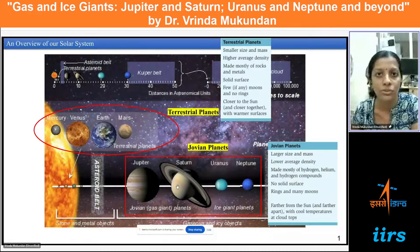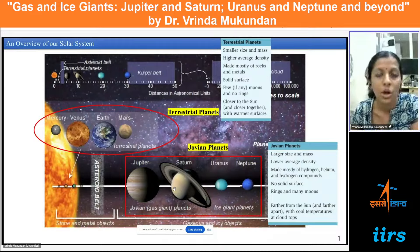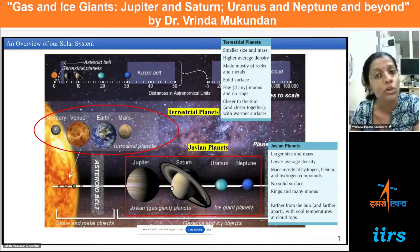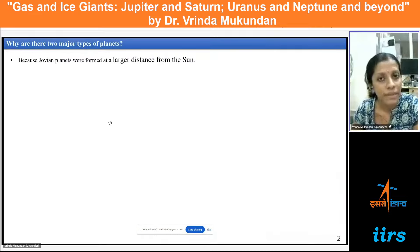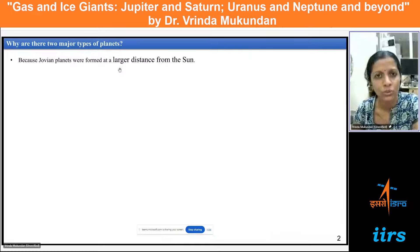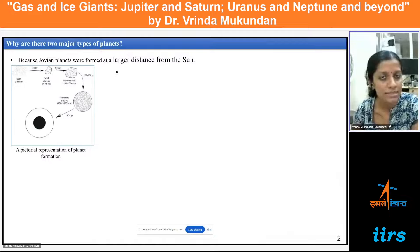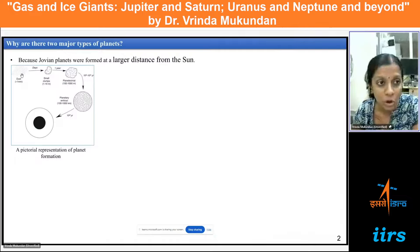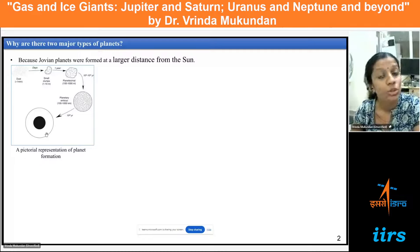But now the question is: why do two kinds of composition exist among the planets in our solar system? You may have already learned that all the planets formed from the same solar nebula — which is simply a cloud of dust and gas. So if every planet formed from the same solar nebula, why does this difference in composition exist? The main reason is that the Jovian planets formed at a larger distance from the Sun.